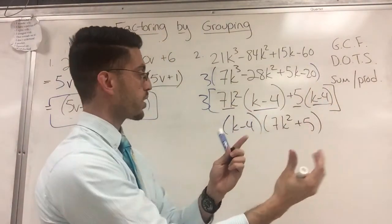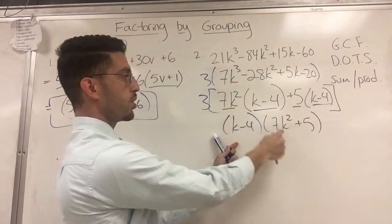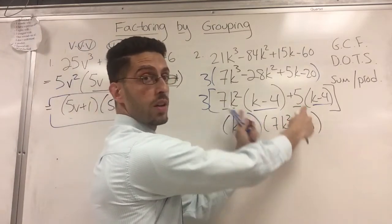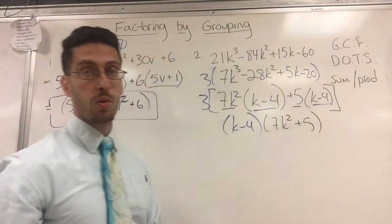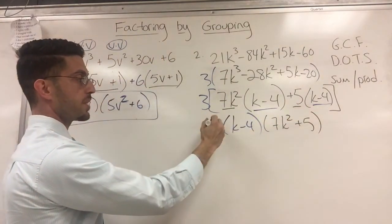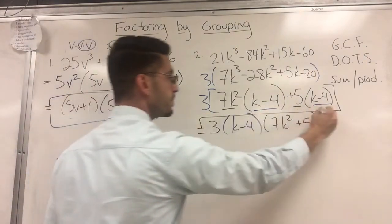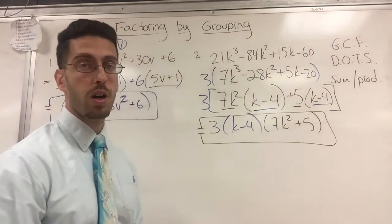Once this K minus 4 gets taken out, you just put what's not taken out together in the binomial. Don't forget to drop down the 3. And you are done.